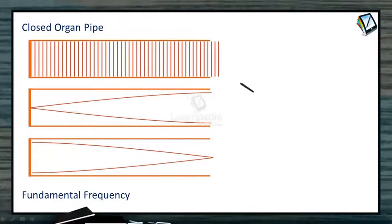Here is the case of closed organ pipe in the fundamental mode. As you know that at the closed end, it should be a displacement node. According to the displacement, it should be a node at the closed end and at the open end, it should be an anti-node.